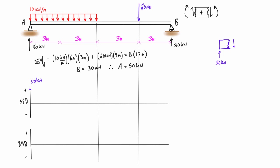Moving across the distributed load, it's adding downward load on the member. Taking the whole 6-meter span of 10 kilonewtons per meter gives a total of 60 kilonewtons pressing down. So just to the left of that next marker we have 50 kilonewtons up and 60 kilonewtons down, meaning the internal shear must be 10 kilonewtons upward — or negative 10 in the downward direction — placing us at negative 10 kilonewtons. The shear then carries as a straight horizontal line through the next section where nothing is happening.